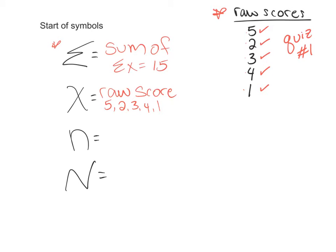Now n is the number of raw scores in a sample. We talked about the difference between a sample and a population, but the number of raw scores in a sample would be n, little n. In this case, we have five—one, two, three, four, five people took the quiz.